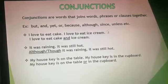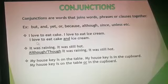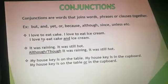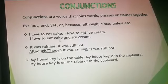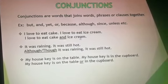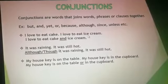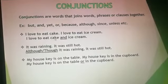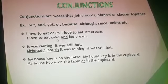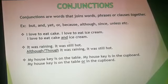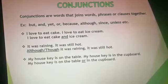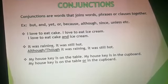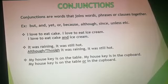Consider: 'I love to eat cake.' and 'I love to eat ice cream.' These can be connected using a conjunction: 'I love to eat cake and ice cream.' In this sentence, the two words cake and ice cream are connected using the conjunction 'and'.